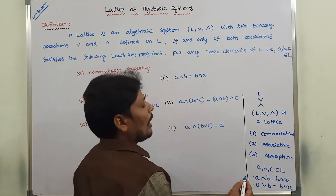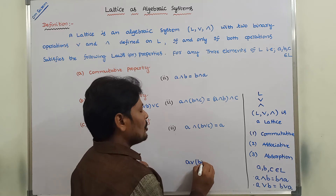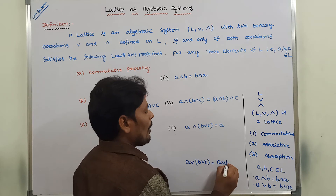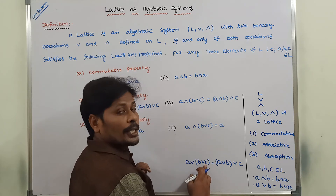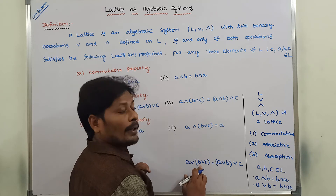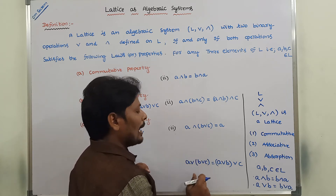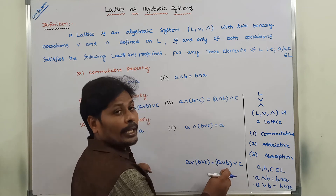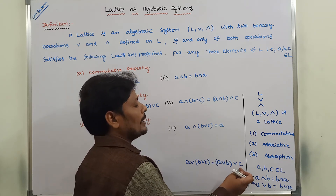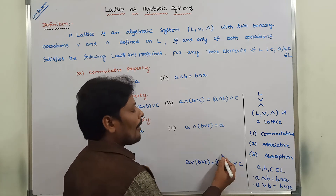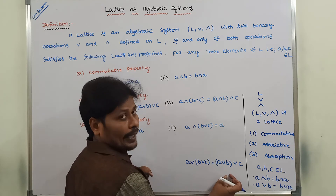Next, we are taking the associative property. Associative property is: A join (B join C) is equal to (A join B) join C. First, we have to calculate the join operation between B and C, and whatever result we get, that result is joined with element A — this is the LHS side. On the RHS side, first we calculate the join operation between A and B, and whatever result we get, that result is joined with element C. Whatever result we get at LHS equals the result at RHS — then it satisfies the associative property.